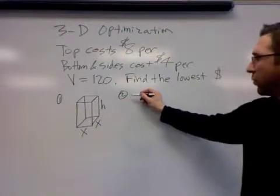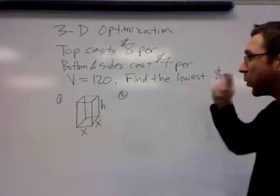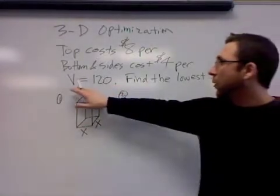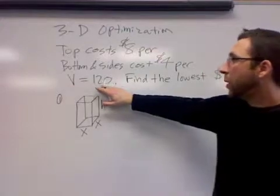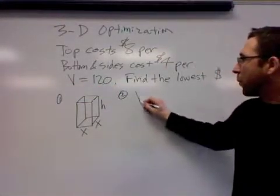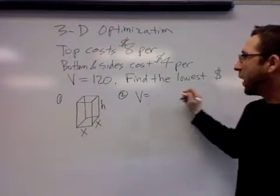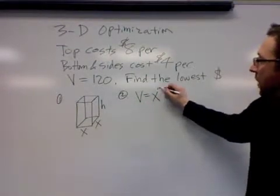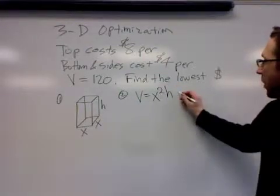The second step is to write out the equation that is the fact in the question, the numeric fact or the limitation. We're told that the volume has to be 120. The volume formula for rectangles is length times width times height. For this rectangle it's x times x times h, and we're told that it's 120.